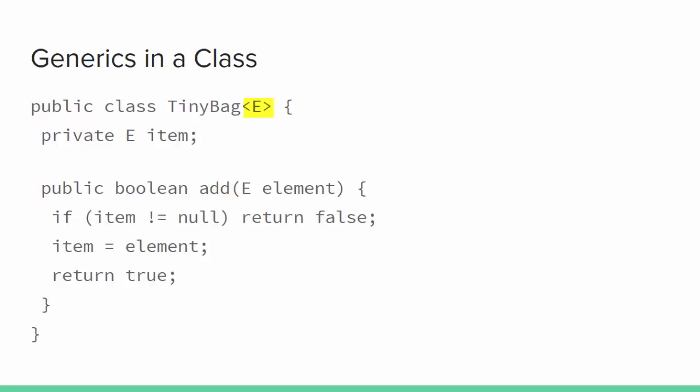The generic type is included in the class or interface header and everywhere else in the code where that type is needed. We're basically saying: once someone tells me what this type is supposed to be, replace all the generics with the specified type. Once the object is instantiated, all references to the generic type will be replaced with references of the specified type.